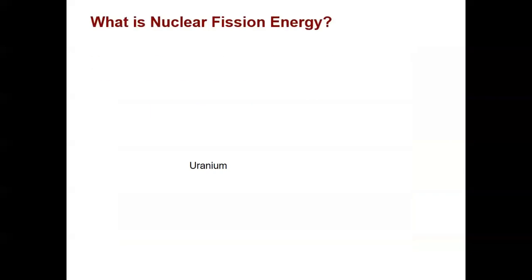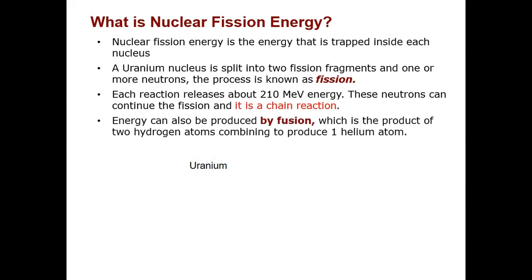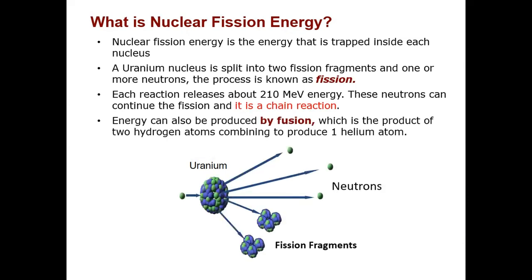Let's start our discussion with fission, which is based on uranium. Fission is a reaction in which large energy is produced as a result of splitting the uranium nucleus into two fission fragments and two or three neutrons, upon the absorption of a thermal or low energy neutron.